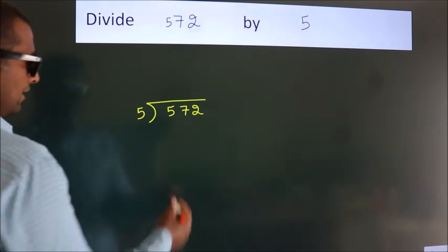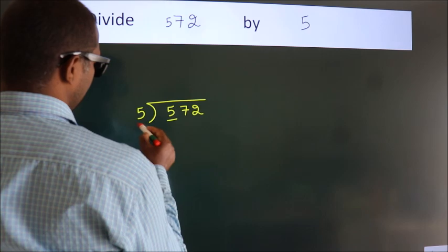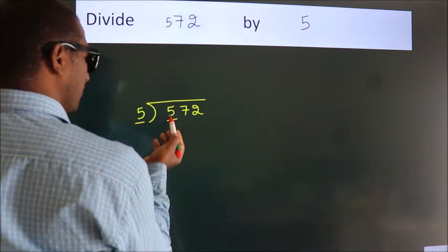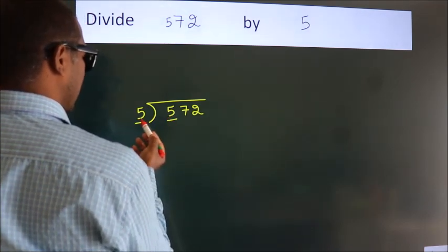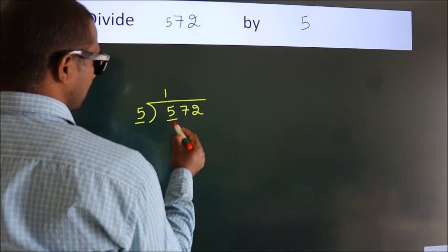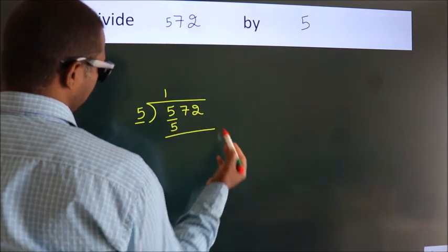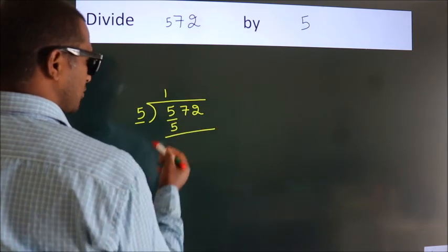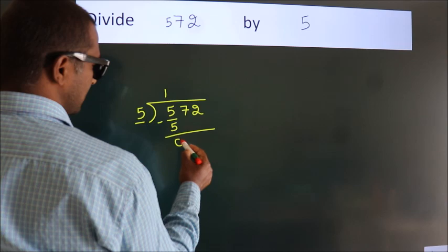Next, here we have 5, here 5. When do we get 5? In 5 table, 5 once, 5. Now we should subtract, we get 0.